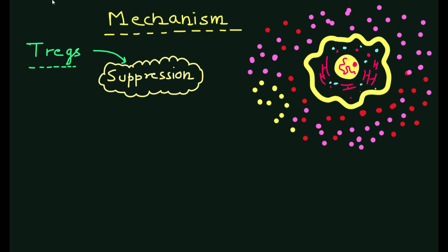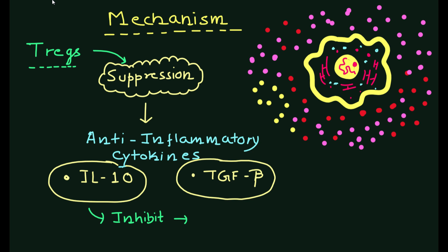Firstly they produce anti-inflammatory cytokines such as IL-10 and TGF-beta which can inhibit the activation of other immune cells.